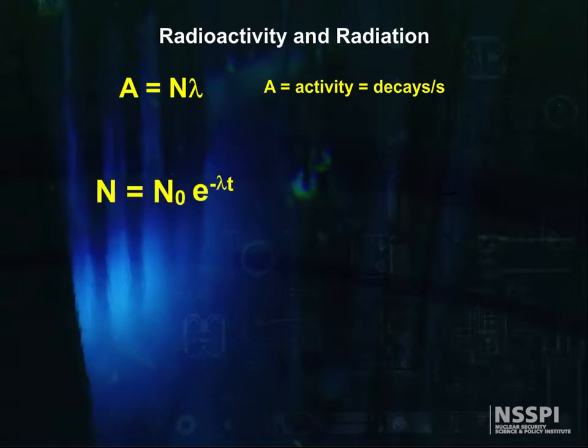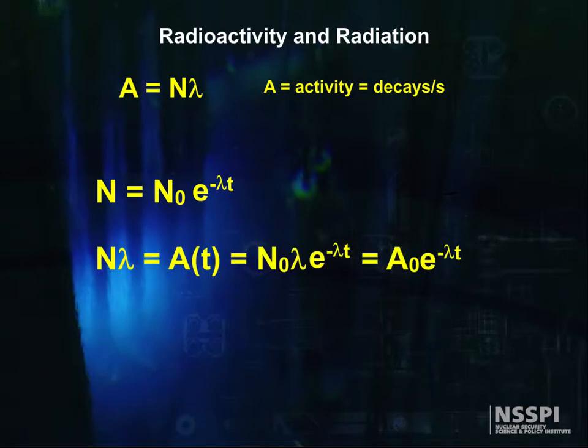Remember our equation for decay? n equals n naught times e to the minus lambda t. Look what happens if we multiply both sides by lambda. In words, it says the activity is predicted the same way as the remaining nuclides are predicted. No real surprises here, but it's nice when someone shows you.